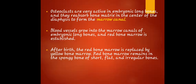Red bone marrow remains in the spongy bone of short, flat, and irregular bones. The replacement between yellow bone marrow and red bone marrow occurs at a certain stage — in the stage of pregnancy and embryonic development. After birth, your bone marrow transitions from red to yellow, while red bone marrow remains in the spongy bone. There are two types of bones: compact bone, located in long bones, and spongy bone, found in short, flat, and irregular bones.